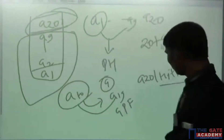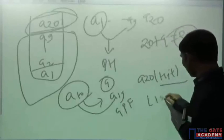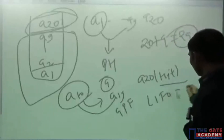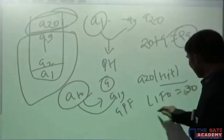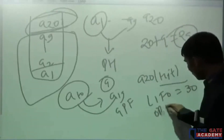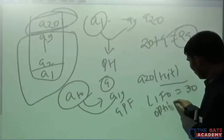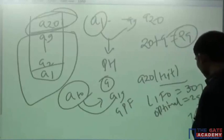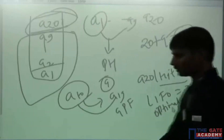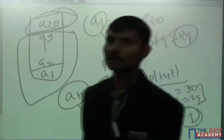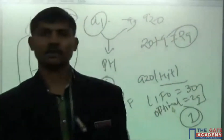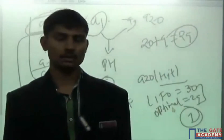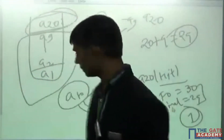According to LIFO, 30 page faults. According to the optimal policy, 29 page faults. So what is the difference? The difference is 1. The answer is 1 page fault.